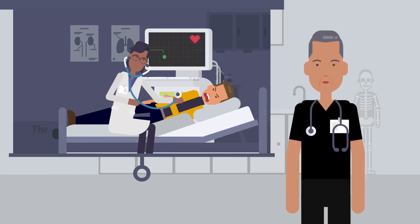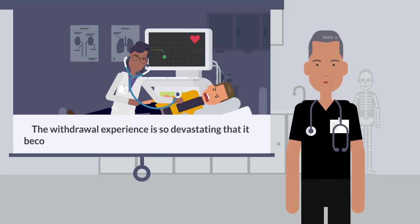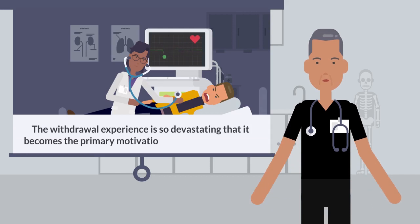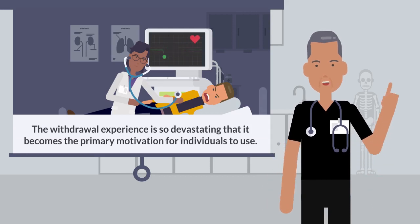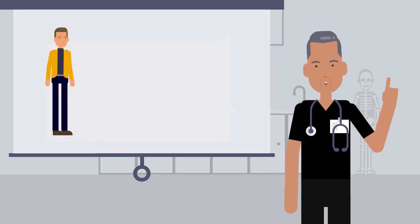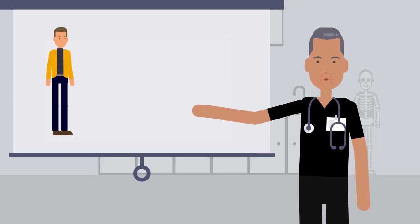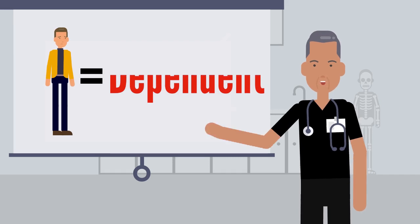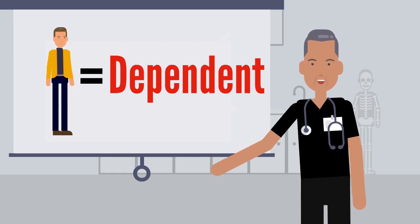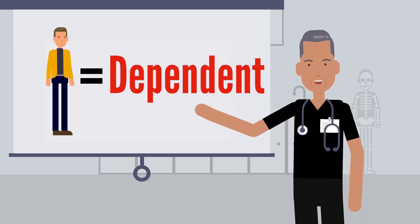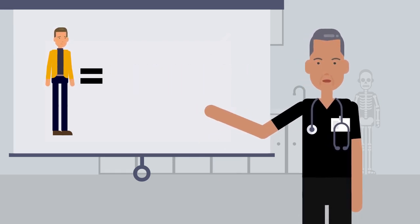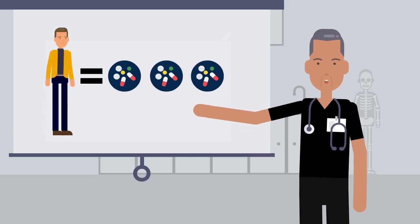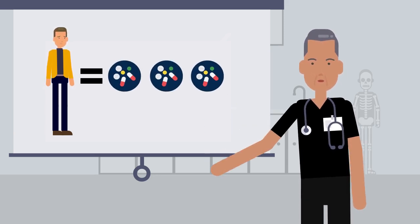The withdrawal experience is so devastating that it becomes the primary motivation for individuals to use. Whereas initially the opioids were used for pain relief and euphoria, eventually the body reaches a point where the purpose of using is solely to avoid withdrawal, which becomes a vicious cycle of needing more and more to maintain a baseline and avoid withdrawal.